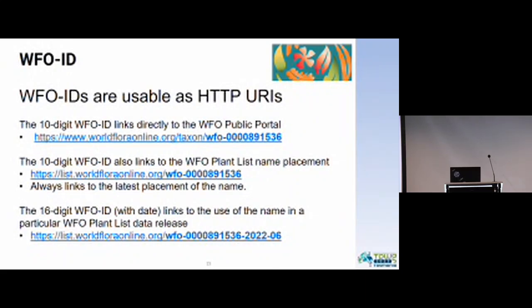WFO IDs are usable as HTTP URIs. The 10-digit WFO ID links directly to the WFO public portal using the form worldfloraonline.org/taxon followed by the WFO ID — in this case, that would take you to the Poa annua page. The 10-digit WFO ID also links to the WFO Plant List name using list.worldfloraonline.org with the WFO ID, and it always links to the latest placement of the name. If you use the 16-digit form, that links to a particular plant list data release — for example, list.worldfloraonline.org with WFO ID and 22-06 would be the June 2022 data release.